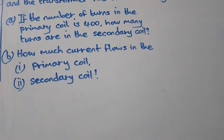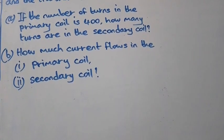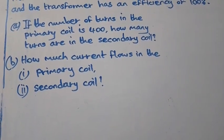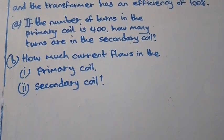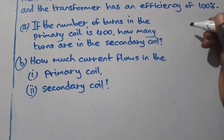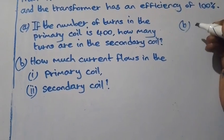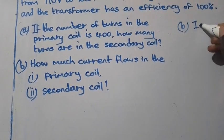We go to part B. How much current flows in the primary coil? So that's part B. They want us to find IP.